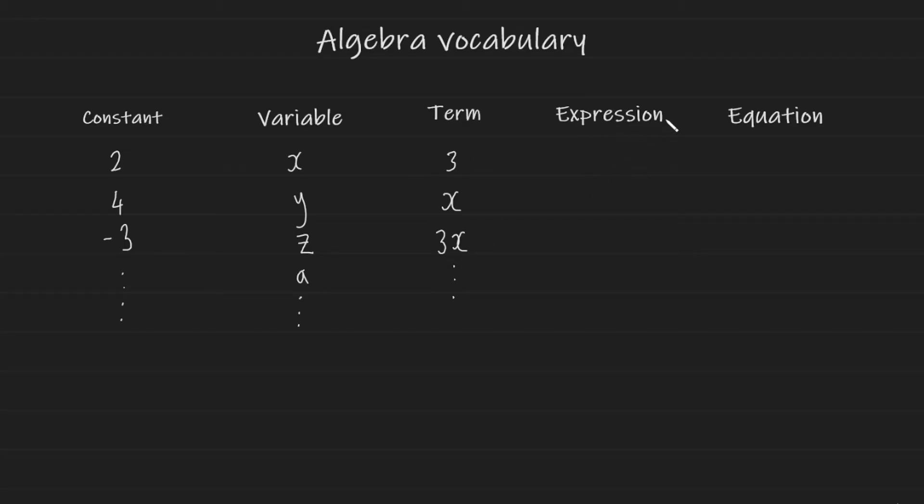So now let's talk about what an expression is. An expression is usually the combination of constants, variables, and terms. When I say combination, I mean they are combined through addition or subtraction. Let's take a look at the first example.